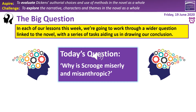Something slightly different now. Obviously, having completed all our annotation of the text, we're now going to have every lesson a question we're going to try and work through, and a series of tasks that will guide us to a possible response to that question. For today, our key question is this: Why is Scrooge miserly and misanthropic? It's a good question, obviously very much focused on the beginning of the text and in Stave Two as well.